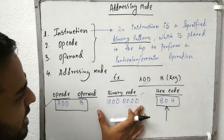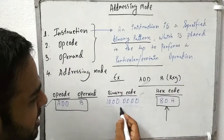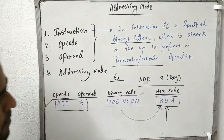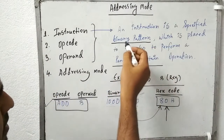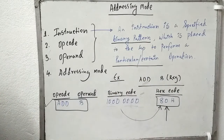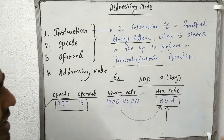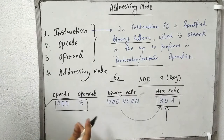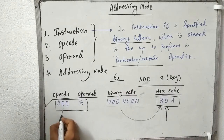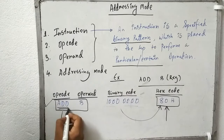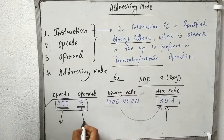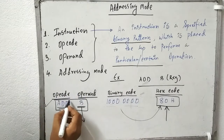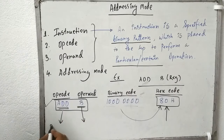I have written this binary pattern which we place to the microprocessor to perform an operation. Now if you look at the instruction ADD B, you will find there are two parts. One is ADD and the second one is B. ADD is called the opcode, and B is called the operand.